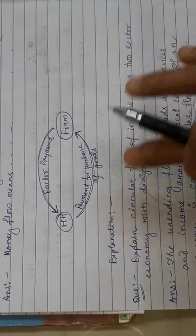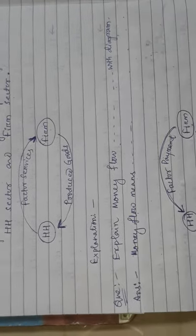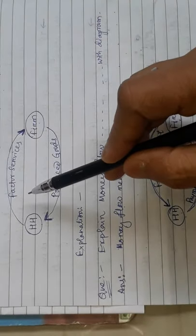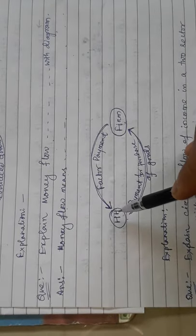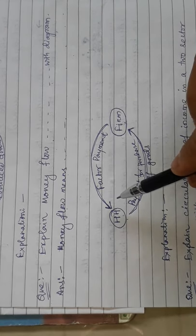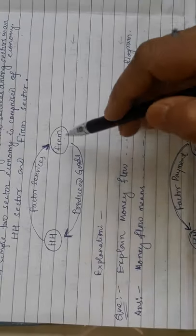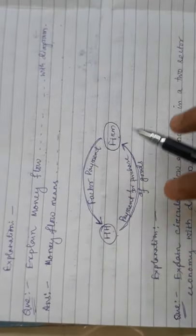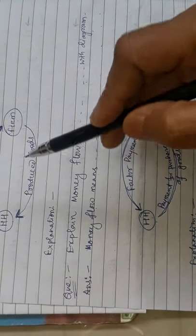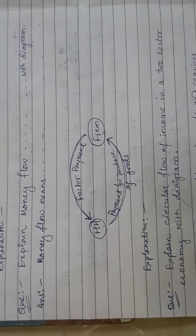Iske baad ek diagram banana hai — household aur firm. Dekho yeh jo real flow hai is tarah se clockwise move ho raha hai, aur jab hum money flow mein hain toh yeh anti-clockwise move ho raha hai. Real flow jis direction mein hoga, money flow theek uska opposite direction mein hoga.